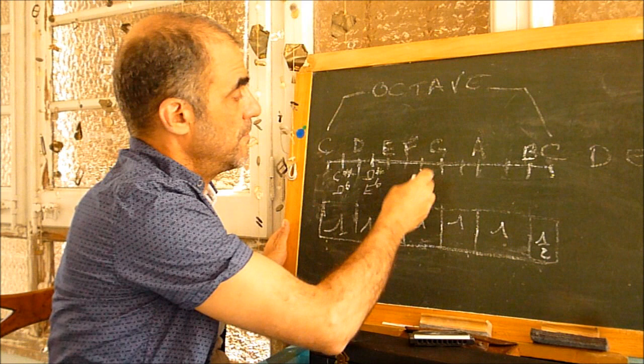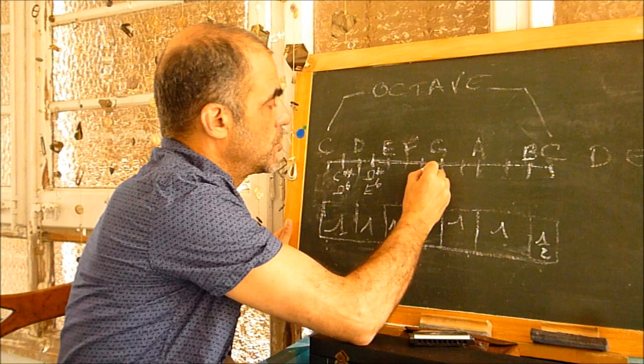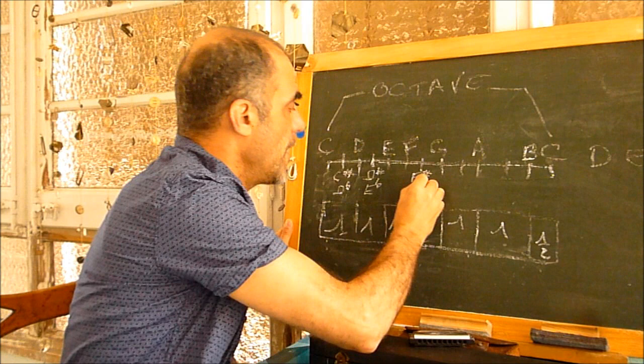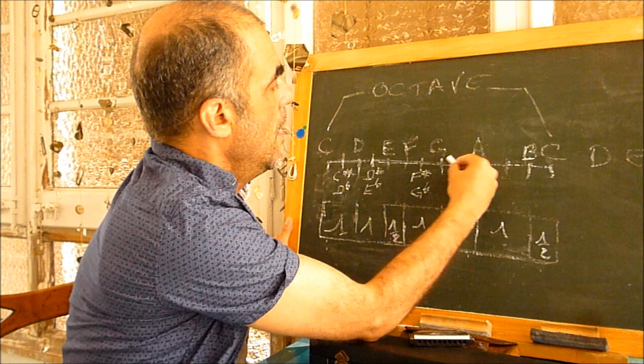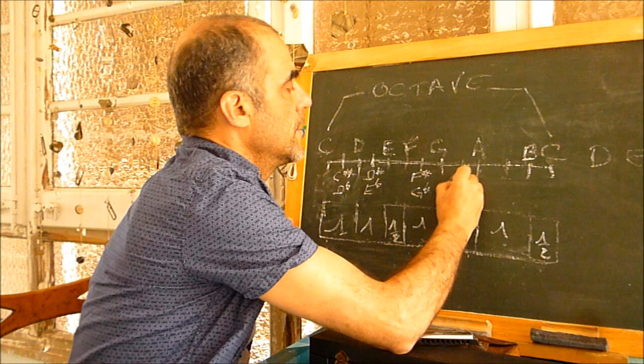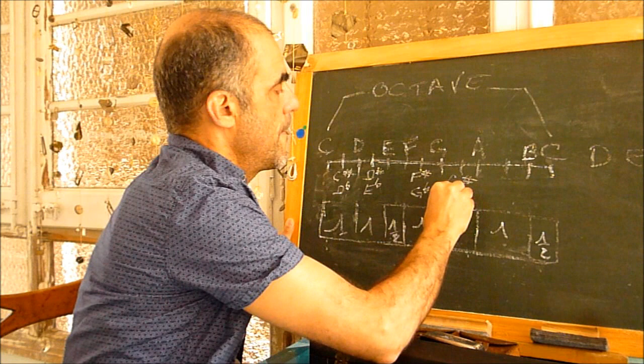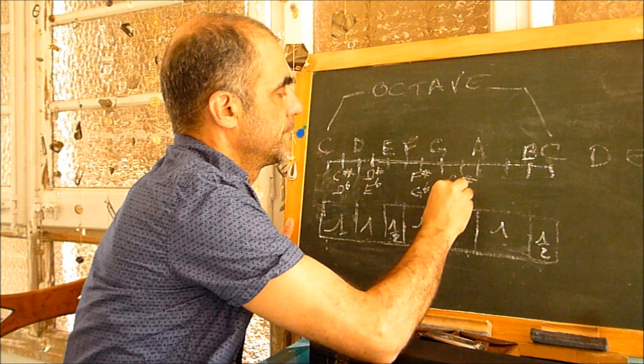Between E and F there is only one half tone. Then between F and G we have the same situation — we could add one half tone and choose to call it F sharp, or we could call it G flat. And between G and A, we could call it G sharp or A flat — it's the same.